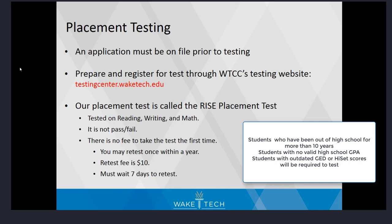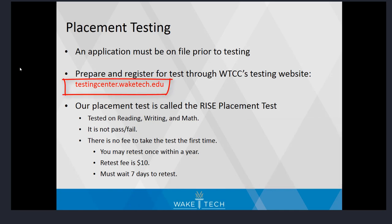If you do not meet any of the testing exemptions, you will be required to take the RISE placement test. An application must be on file prior to testing, and you may find information on preparing and registering through Wake Tech's testing website at testingcenter.waketech.edu. The test is not pass-fail; it determines at what level you should begin your courses. If you decide to retake the test, you must wait 7 days and pay a $10 retest fee.